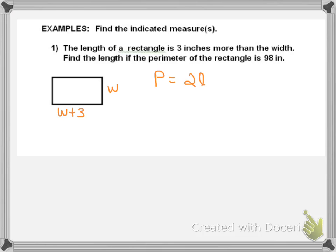The perimeter of the rectangle is 98, so here's how we do it. The perimeter formula for a rectangle is 2L plus 2W. I know the perimeter is 98. I know now that my length is W plus 3, so I'll substitute that in for L. I also know that my W is just W.